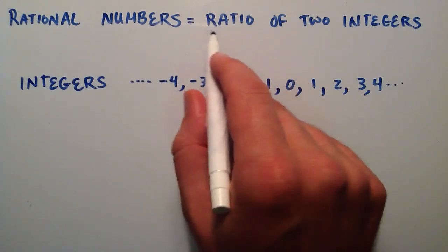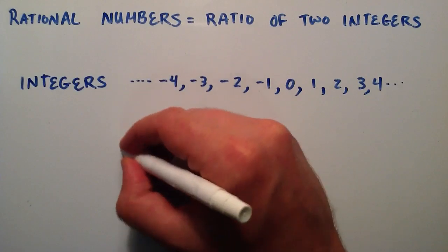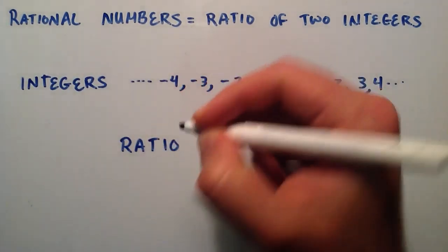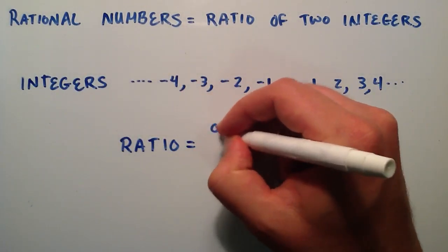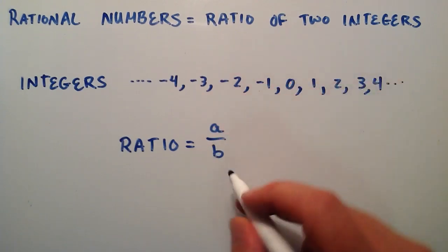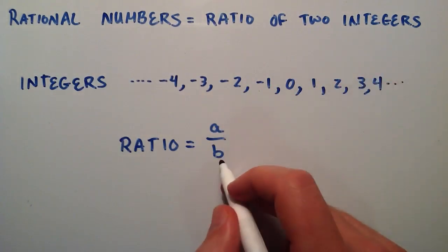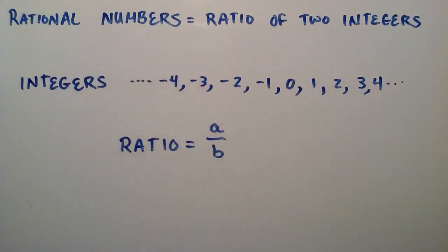So then what is a ratio of two integers? Well a ratio is simply one number divided by another number. We'll just call our numbers A and B. So if A is an integer and B is an integer, then we have a rational number.